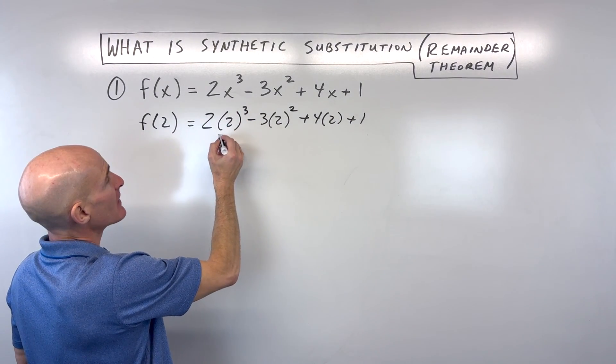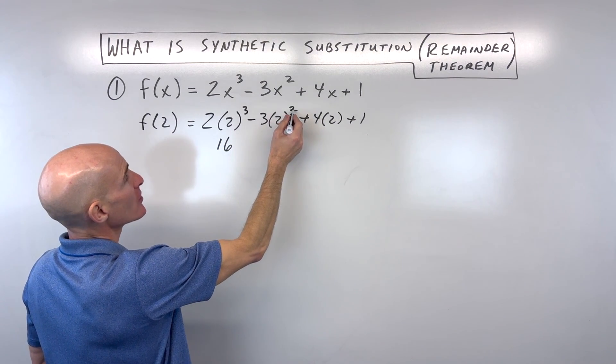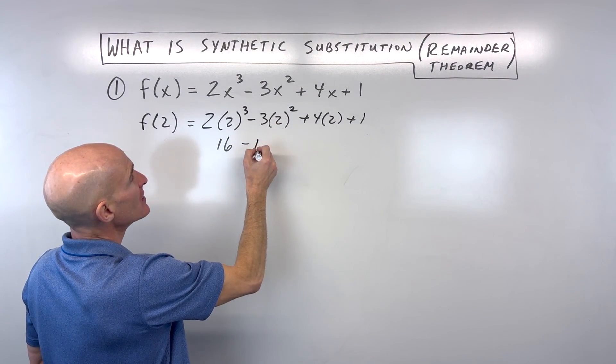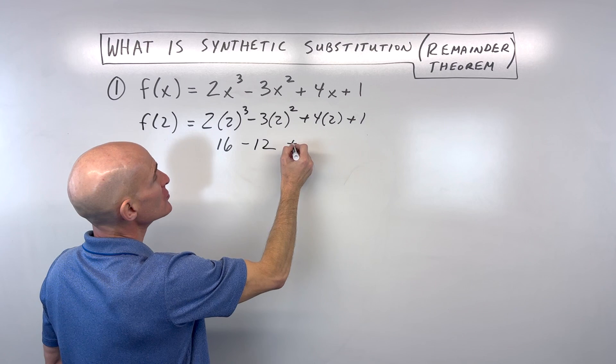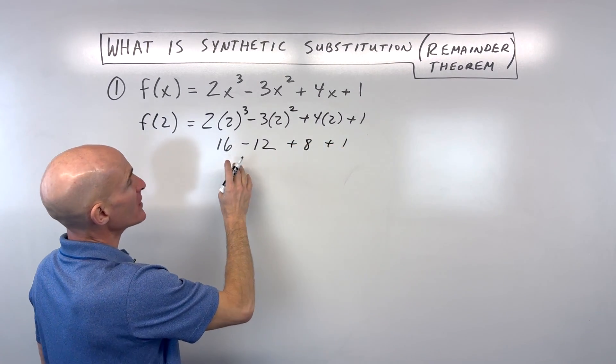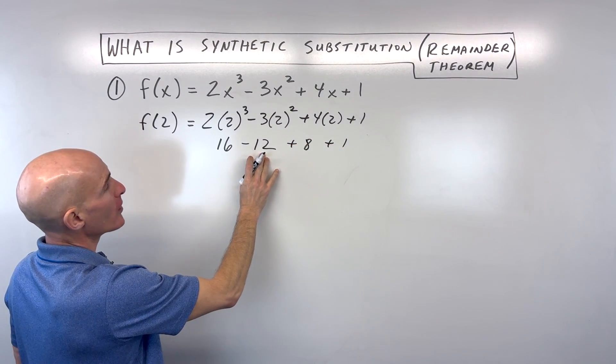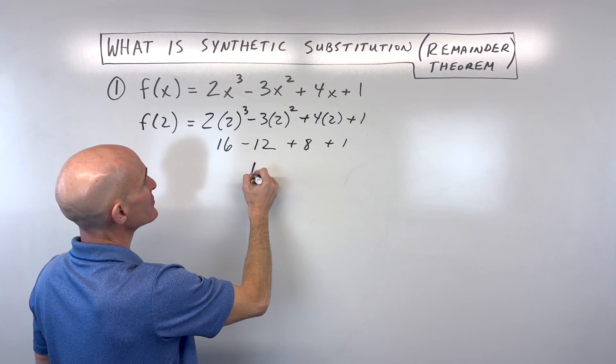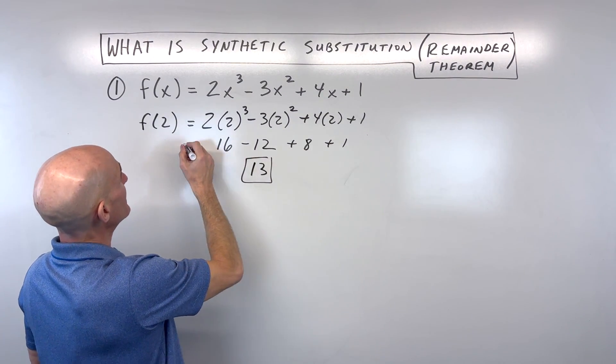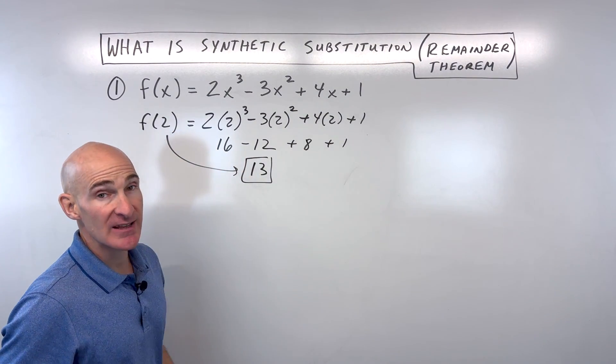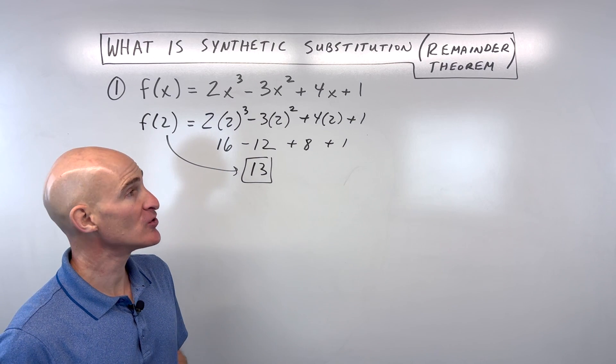So 2 cubed is 8 times 2 is 16. 2 squared is 4 times 3 is 12. 4 times 2 is 8 plus 1. So if we add these together, we get 4 plus 8 is 12 plus 1 is 13. So you can see that f of 2 is equal to 13. That's the old way, the direct substitution way.